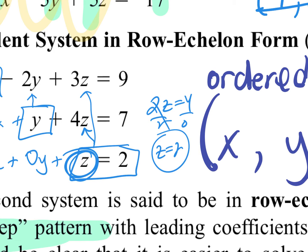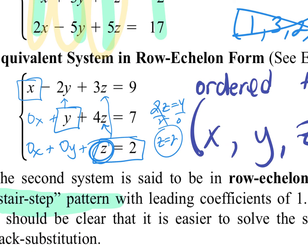Once you get your answer, you can plug it back in to make sure you're right. Take two seconds and plug it back in, because if you miss one negative sign and tell me x is 1 when it should have been negative 1, that's going to mess up the entire problem. I would tell you to check your answers. You'll have questions in row echelon stair-step form — solve using back substitution — and some where you verify if an ordered triple is a solution.